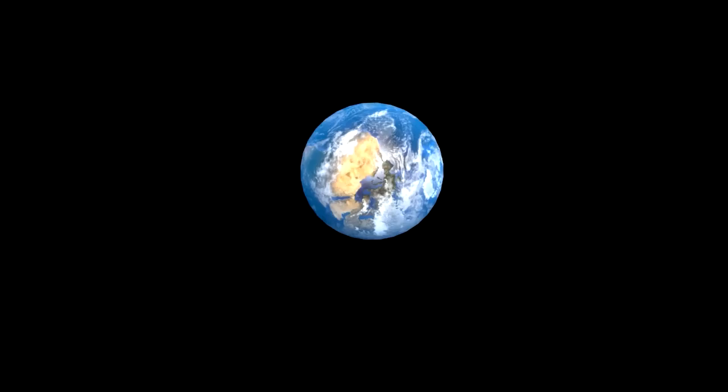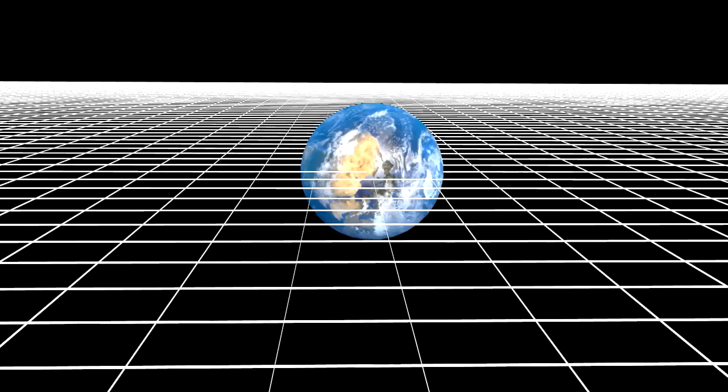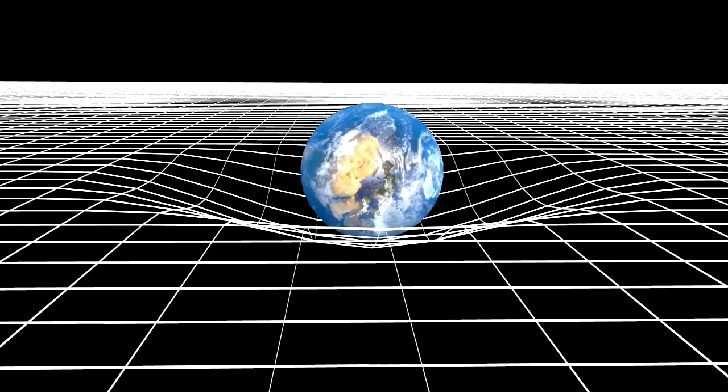Let's start with gravity. Here's the Earth in space. To see that space, we can draw a two-dimensional grid. If we have a mass, like the Earth, then according to Einstein, that mass deforms the space, or curves it.